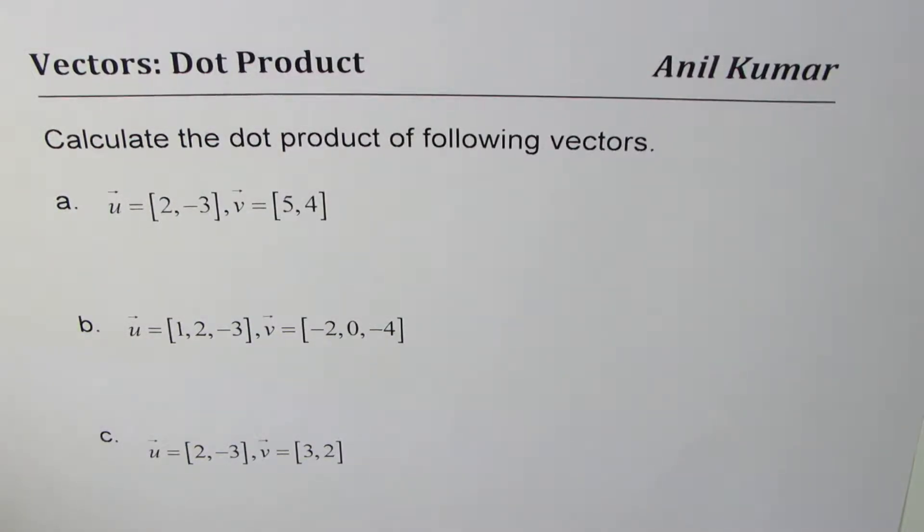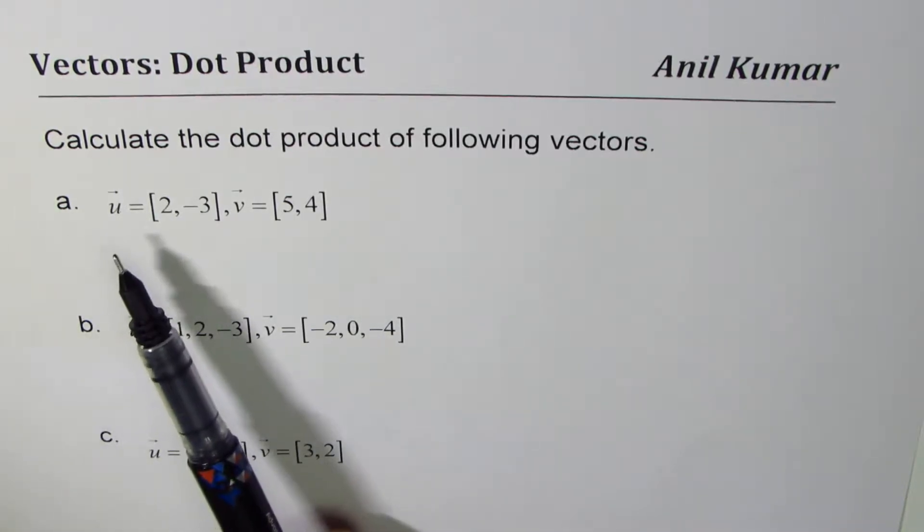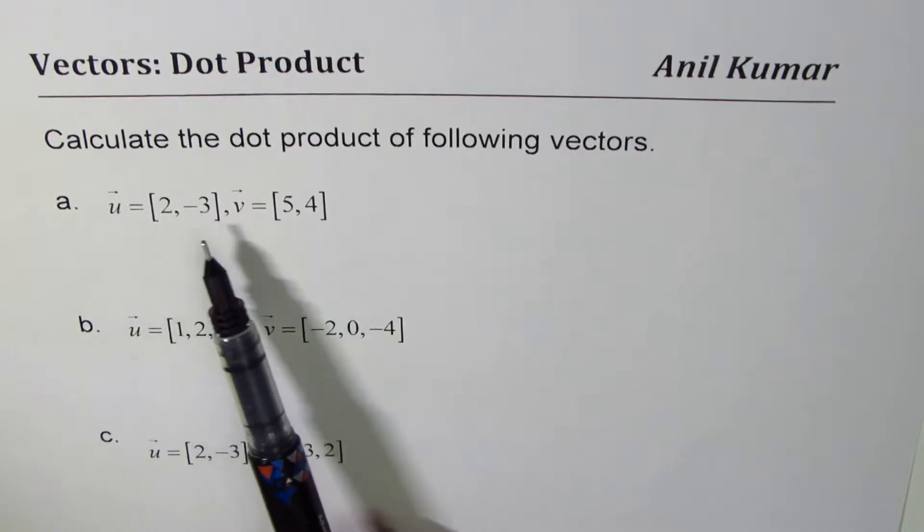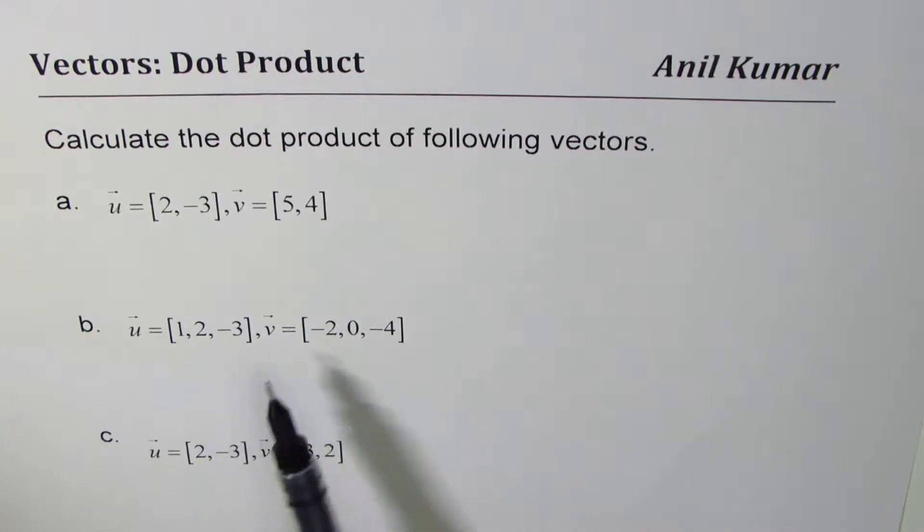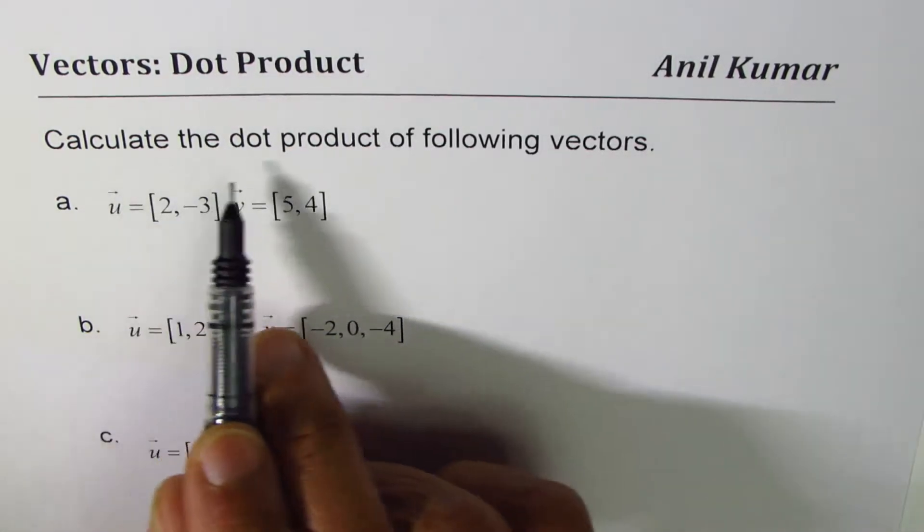I'm Anil Kumar. Here is a practice question for you to find dot product of vectors. Calculate the dot product of the following vectors: a) u is [2, -3], v is [5, 4]; b) u is [1, 2, -3], v is [-2, 0, -4]; and c) u is [2, -3], v is [3, -2].